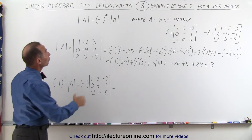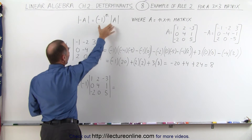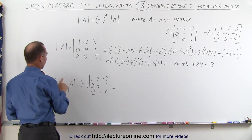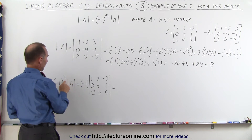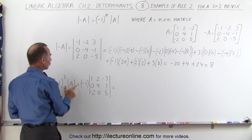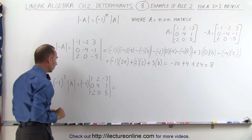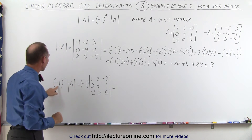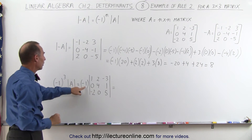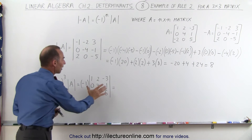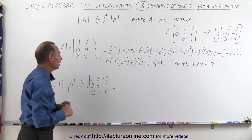Now let's work out the right side of that equation. We get negative 1 to the third power — it's a 3 by 3 matrix — times the determinant of matrix A. Negative 1 to the third power is simply negative 1, and now we have to work out what's inside.